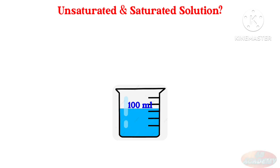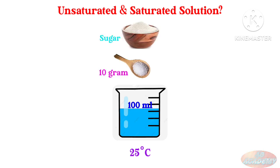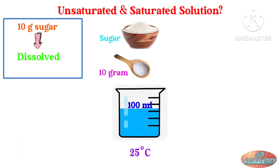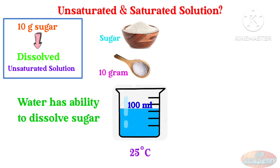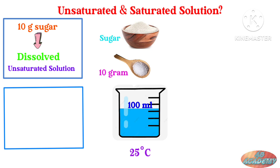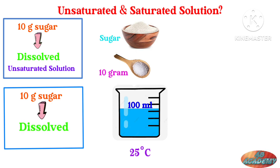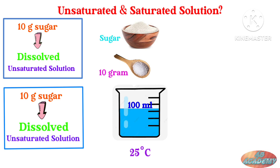Consider 100 ml water in a beaker at 25 degree centigrade. If I add 10 gram sugar to the water, we know that 10 gram sugar is easily dissolved in 100 ml water. We call this solution of sugar and water an unsaturated solution. Now consider that I add 10 grams more sugar to this solution. The water easily dissolves this added sugar. There are now 20 grams of sugar in this solution, but still it is an unsaturated solution.